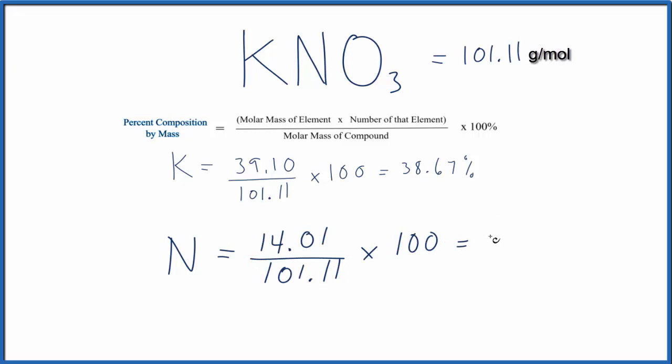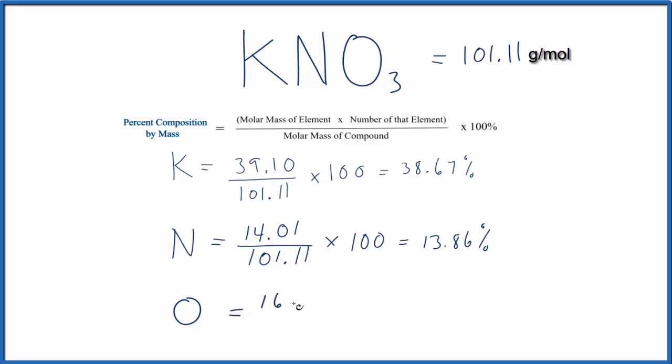Finally, for the oxygen, it's a little bit different because we have a subscript of three here. So we write oxygen equals 16.00, that's the molar mass for oxygen, and we multiply it by the three here because this tells us we have three oxygen. We'll divide that by the molar mass for KNO3.